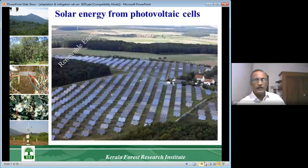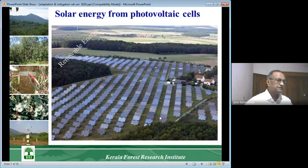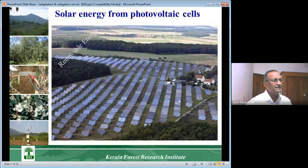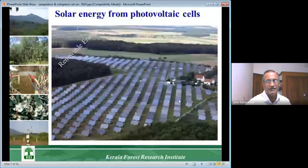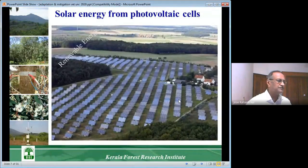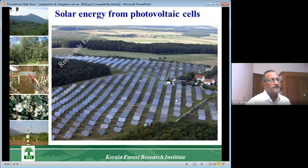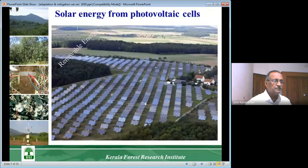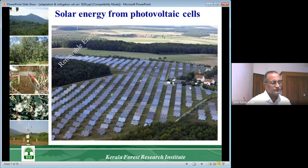The second renewable energy form is solar energy from photovoltaic cells. This is a solar power plant in Australia, but now the entire Kochi airport works on solar panels. Selenium panels convert solar radiation into electrical energy used by villages or facilities. This is another way of renewable energy and mitigating climate change.